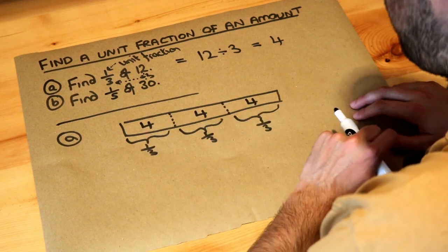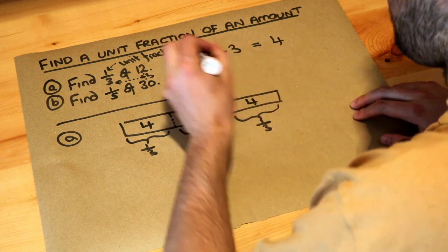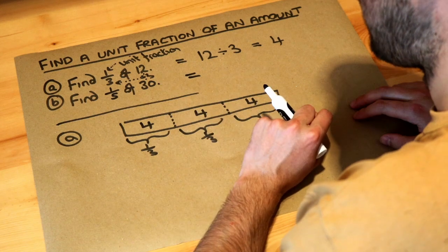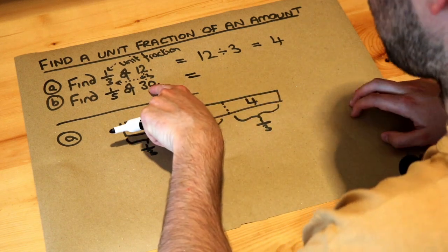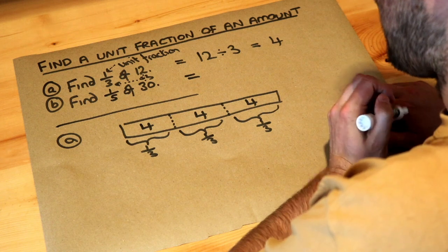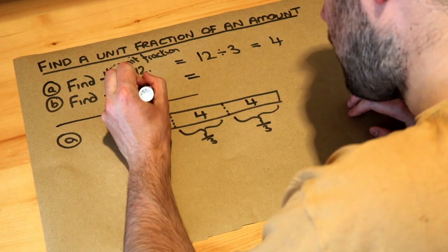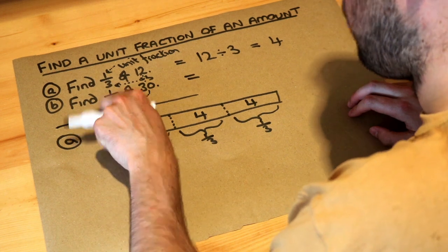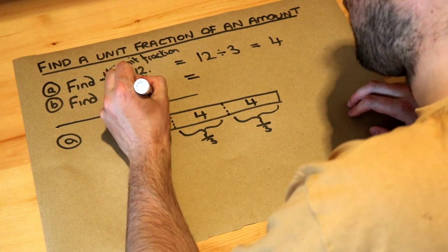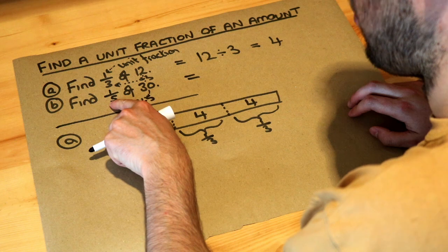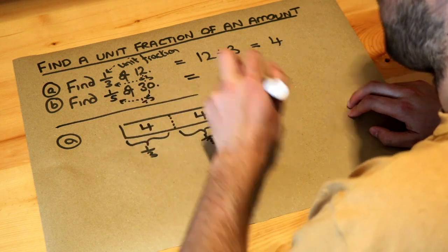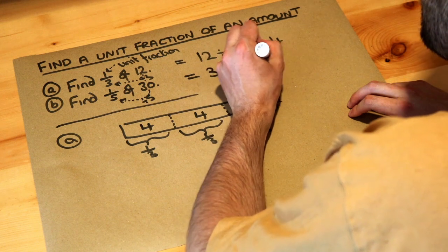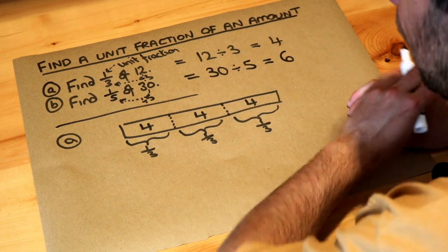What about the second one? We want to find a fifth of 30, so we want to split the 30 into five parts. As per the method before, we just divide that number there by this denominator here. So we just divide the 30 by that bottom number, the denominator. So 30 divided by 5, and that is equal to 6. So that's the final answer.